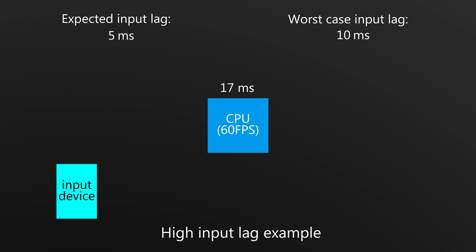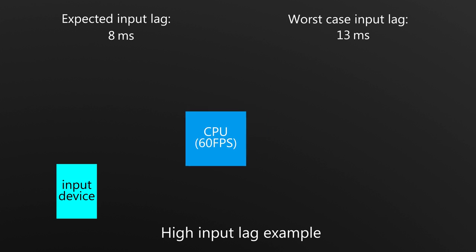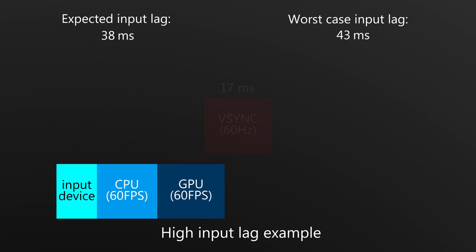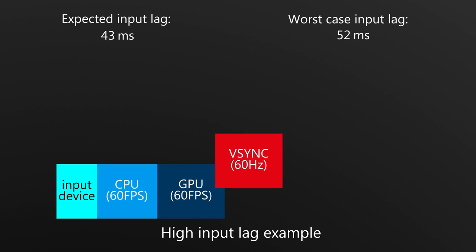Then the game has to process your key presses and calculate what happens in the next frame. This includes things like how far your car turns or the ball's flight path. Once that data is available, the graphics card can start working on actually rendering the image that is going to get displayed on your screen. At a constant 60fps this takes 17ms. Turning on vSync will add another whole frame of input lag and will also limit your FPS to your monitor's refresh rate.